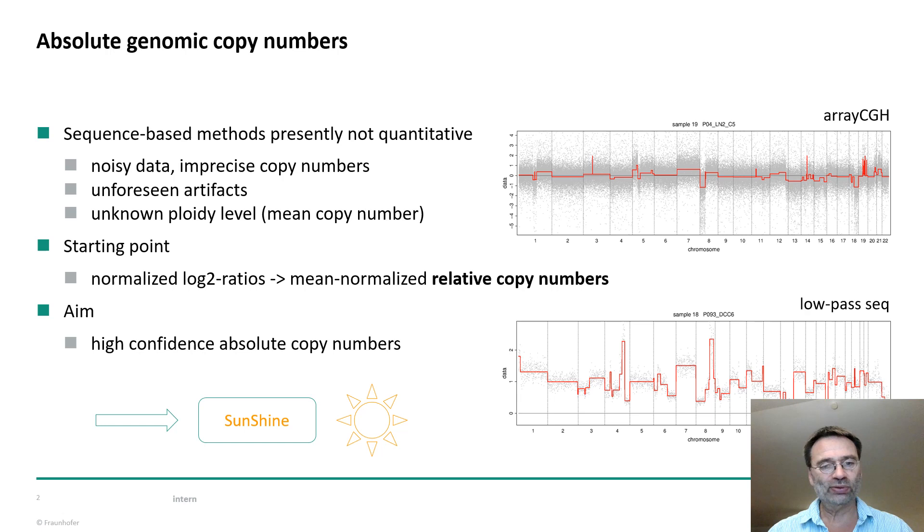Earlier this was measured by fluorescent imaging, but now is replaced by sequence-based methods such as arrayCGH or low-pass sequencing. The data can be quite noisy, copy numbers may be imprecise, and there may be some unforeseen artifacts, which I will show you in the next slide. Overall, because the methods are not really quantitative, the overall ploidy is unknown, meaning that basically the mean copy number is unknown.